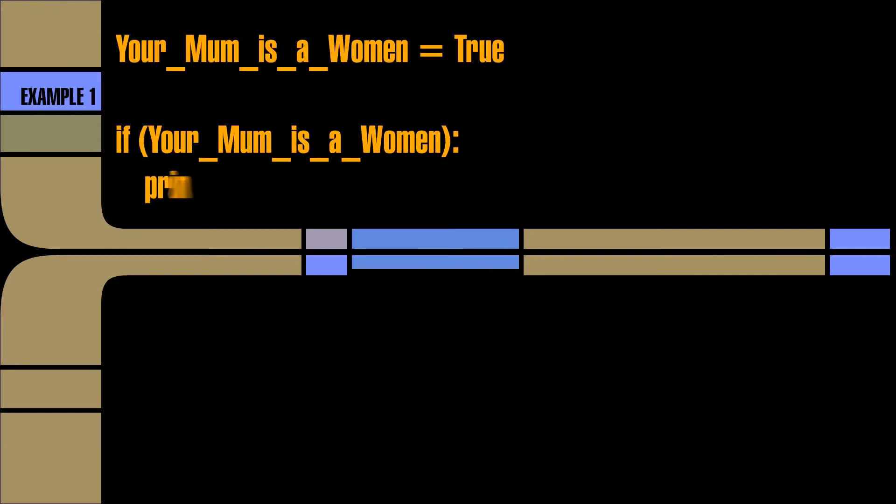The if-then-else mechanism is used to redirect the flow of your program based on a true condition. Here is an example. Here is another example.